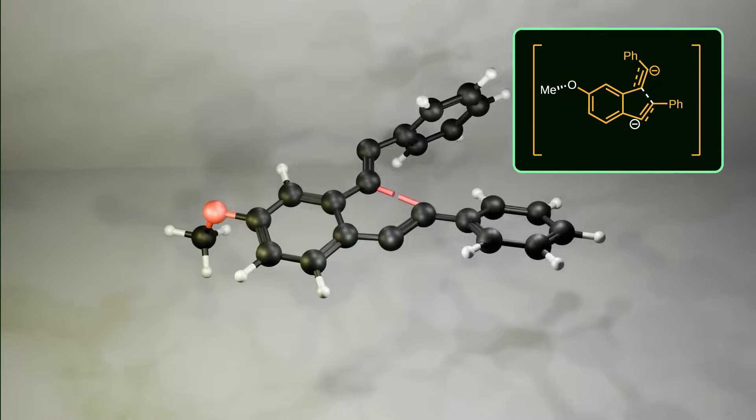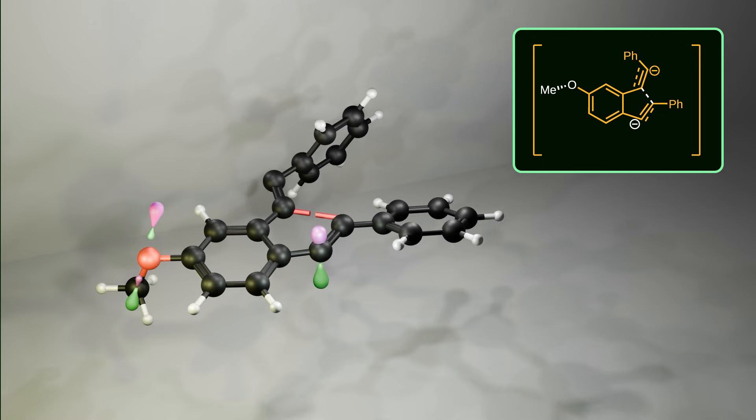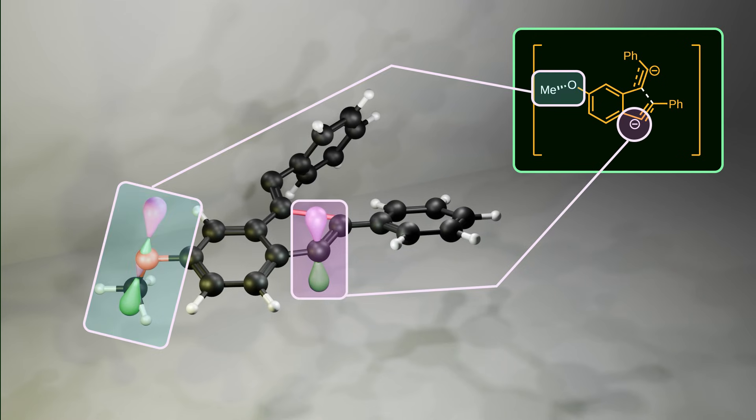Let's take a look at the transition state of the major product, where the new bond is forming between two alkynes. Here the negative charge is located para to the methoxy group, which adopts a perpendicular conformation. We can see that the negative charge is stabilized by the orbital interaction with the anti-bonding orbital of the methoxy group.